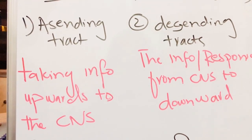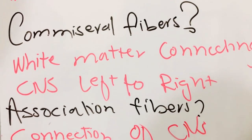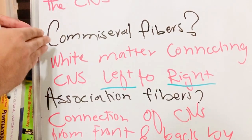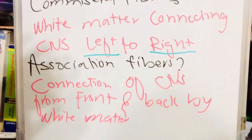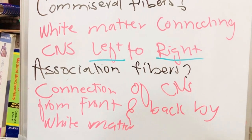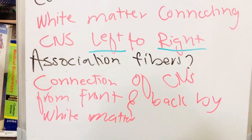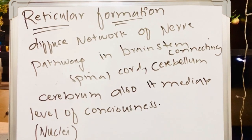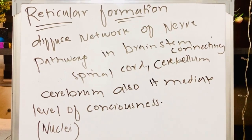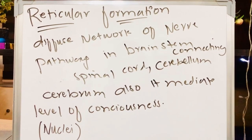Now we will overview the basic concepts related to the nervous system. Commissural fibers are the white matter that connect the central nervous system from left to right — they are what divide the brain into two cerebral hemispheres. The association fiber is the connection within the central nervous system from front to back, that is, anterior to posterior, by white matter. Reticular formation is basically a nuclei — it is a diffuse network of nerve pathways in the brain stem connecting the spinal cord, cerebellum, and cerebrum, and it also mediates the level of consciousness.